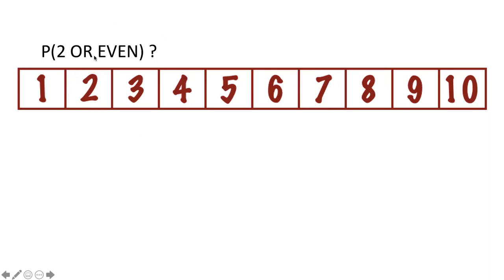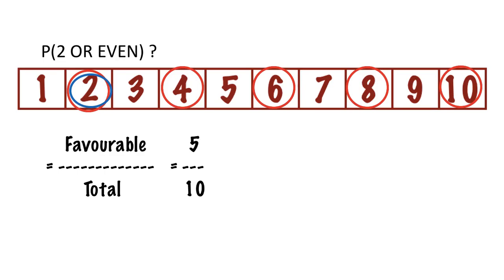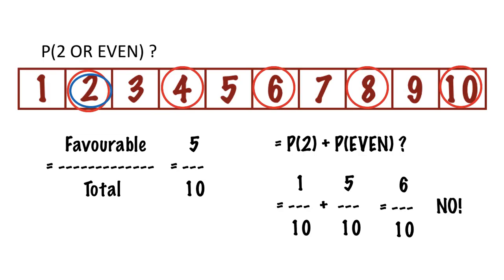In a case like probability of two or even, you don't want to calculate the probability of two and the probability of even separately and add them together, because you get the wrong answer. The favorable outcomes for two: just the number two. The favorable outcomes for even: two, four, six, eight, and ten. Looking at all outcomes circled at least once, there are five. So the correct answer is five out of ten, or one half. But if you lazily add one out of ten plus five out of ten, you get six out of ten — wrong.